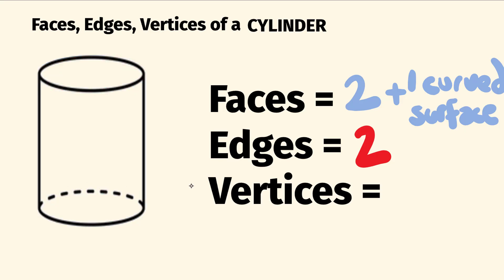Finally, the number of vertices. These are the corners, the sharp bits of a shape. A cylinder has no corners, and you can see that right here. So the number of vertices in a cylinder is zero.